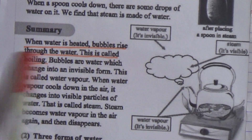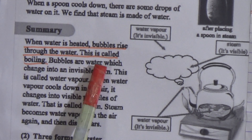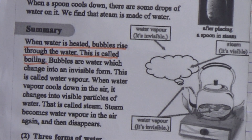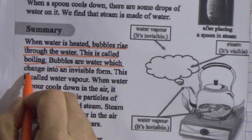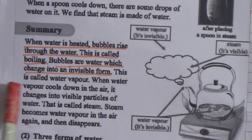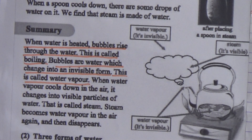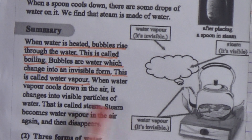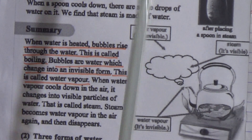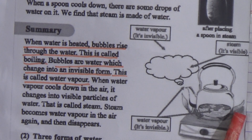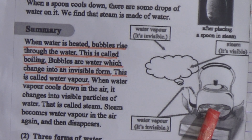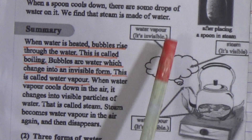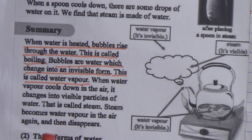Bubbles are water which change into an invisible form, and this is called water vapor. When water vapor goes down into the water, it changes into visible particles of water, and that is called steam. Steam becomes water vapor in the air again and then disappears. In the figure: water is heated — this is water vapor, it is invisible; here is steam, it is visible; and this is water vapor again, also invisible.